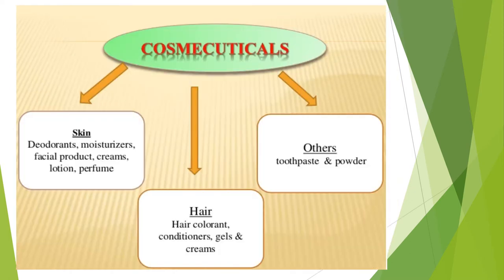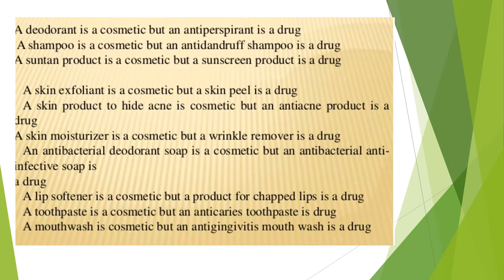Cosmeceuticals classification covers skin, hair, and others. For skin: deodorants, moisturizers, special products, creams, lotions, perfumes. Others include toothpaste and powder. For example, a deodorant is a cosmetic, but an antiperspirant is a drug. An antiperspirant is a drug used for reducing sweating.